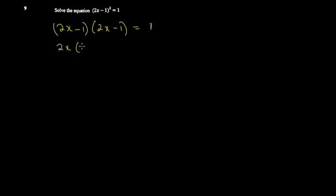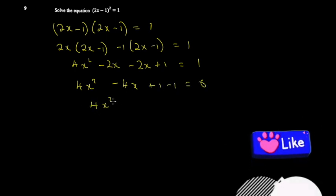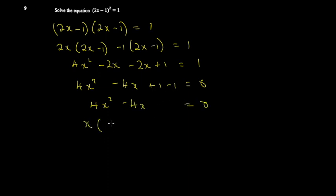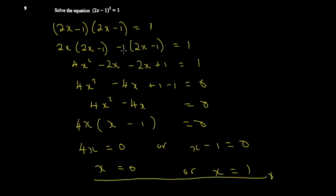So with the expansion method, you write (2x minus 1)(2x minus 1) equal to 1. Expanding gives 4x squared minus 2x minus 2x plus 1 equal to 1. So you get 4x squared minus 4x plus 1 minus 1 equal to 0, which simplifies to 4x squared minus 4x equal to 0. Then 4x equals 0 or x minus 1 equals 0, giving x equals 0 or x equals 1. Remember: the more steps you take, the more likely you are to make mistakes, so find efficient ways of working out problems.